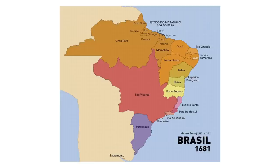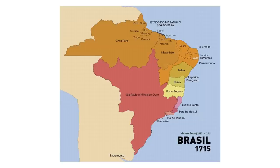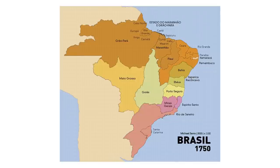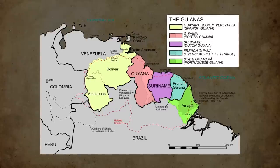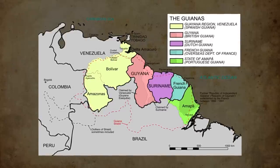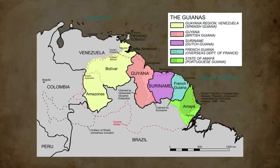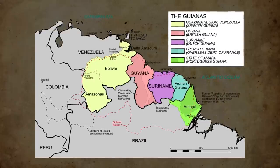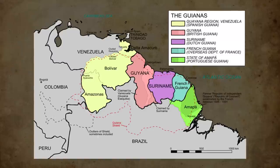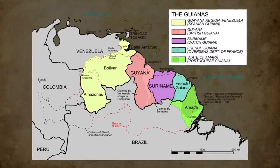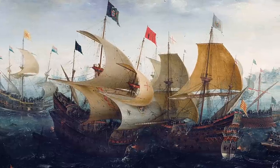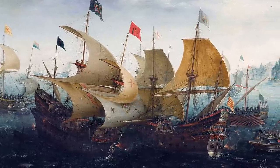Meanwhile, internal territorial reorganizations kept happening within Brazil itself, with regions being renamed, states created, and captaincies losing more and more relevancy as the crown increasingly took direct control. It's fascinating how the Guianas region was so equally separated among the five main colonial powers of Europe — Spain, England, France, the Netherlands, and Portugal — sort of a perfect example of how each of these colonized and decolonized their empire. Brazil, or rather Portugal's disputes in this area were mostly with the French and the Dutch.